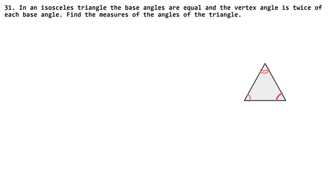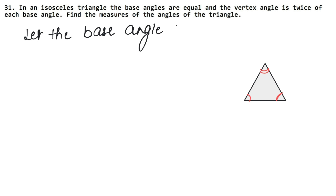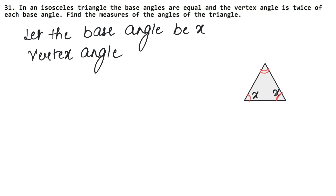We have to find the measurement of the three angles. Let the base angle be x — that means this angle is also x and this is also x. And how much is the vertex angle? The vertex angle equals twice, so 2x.